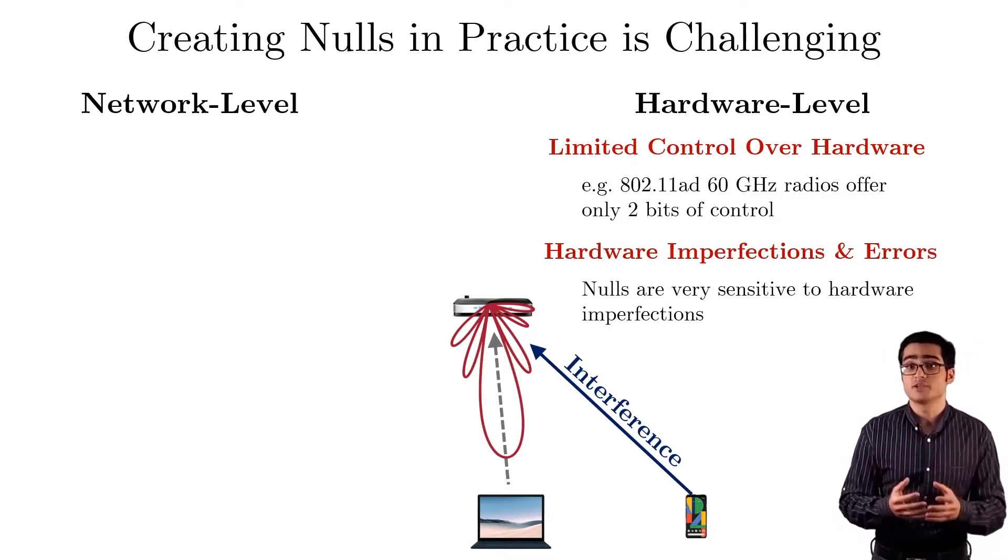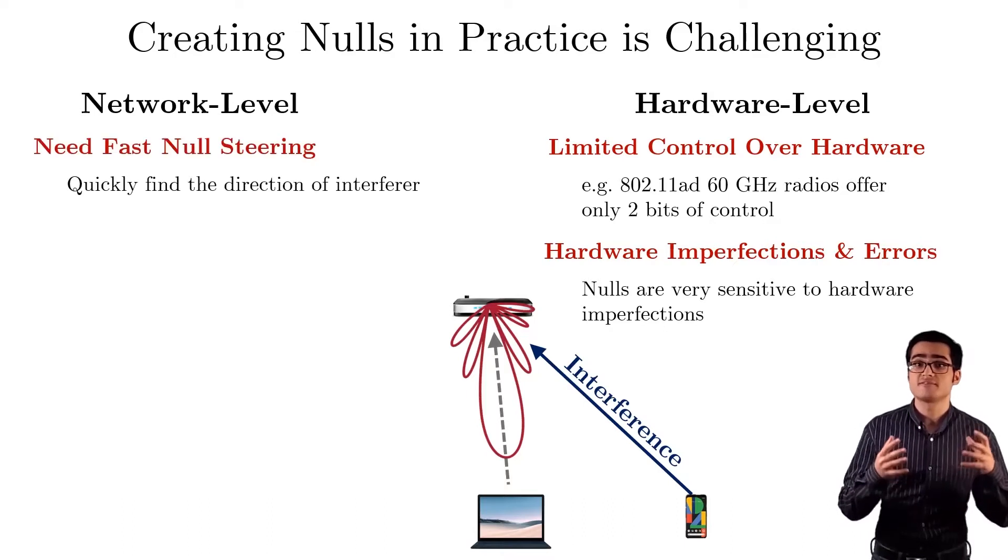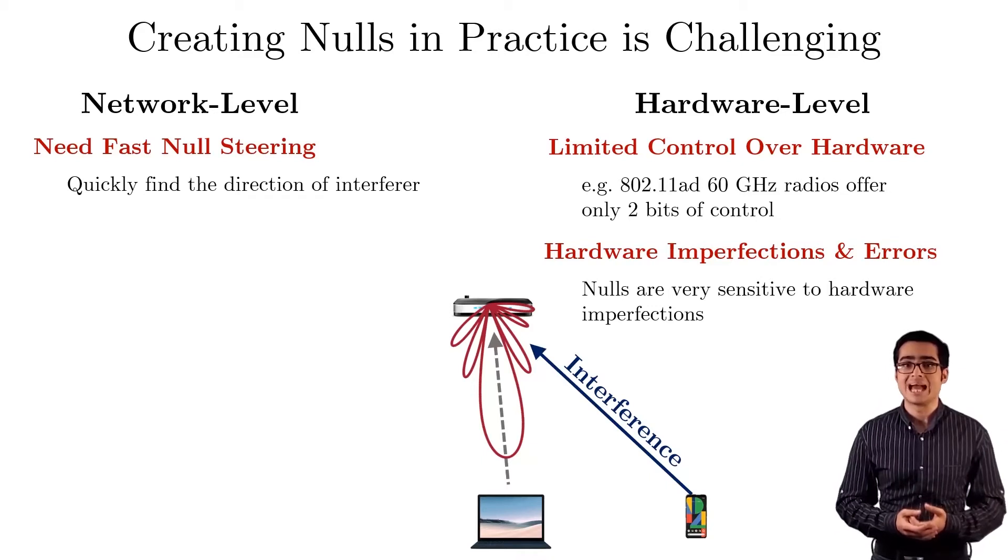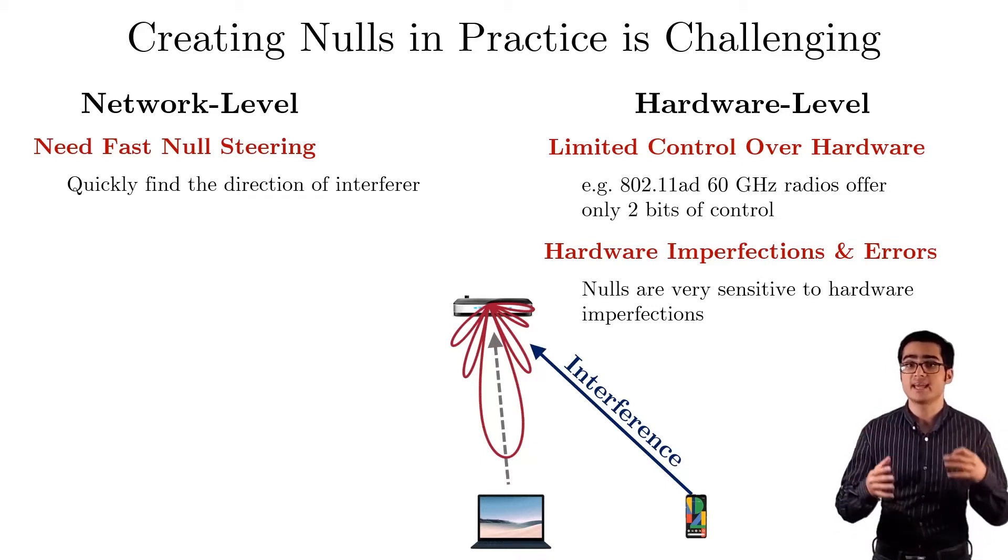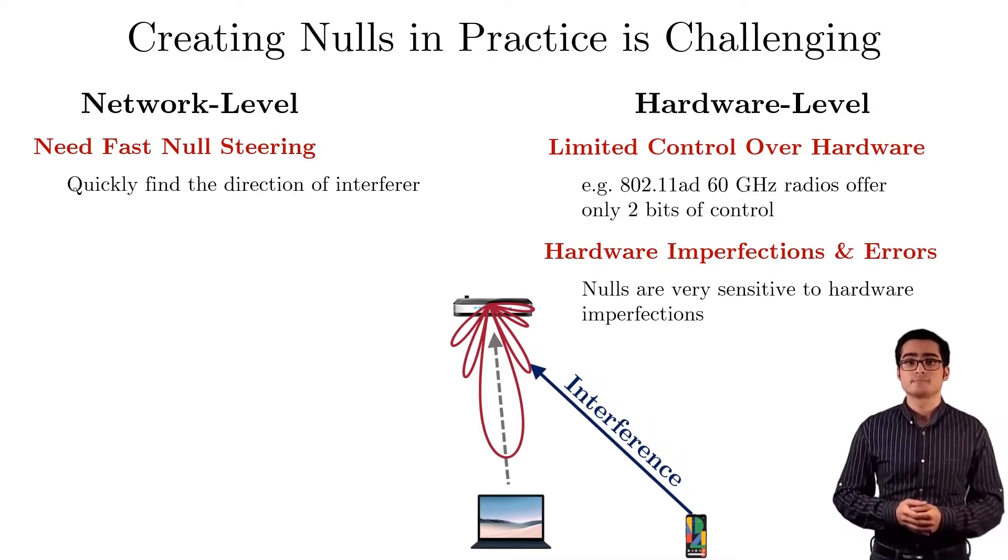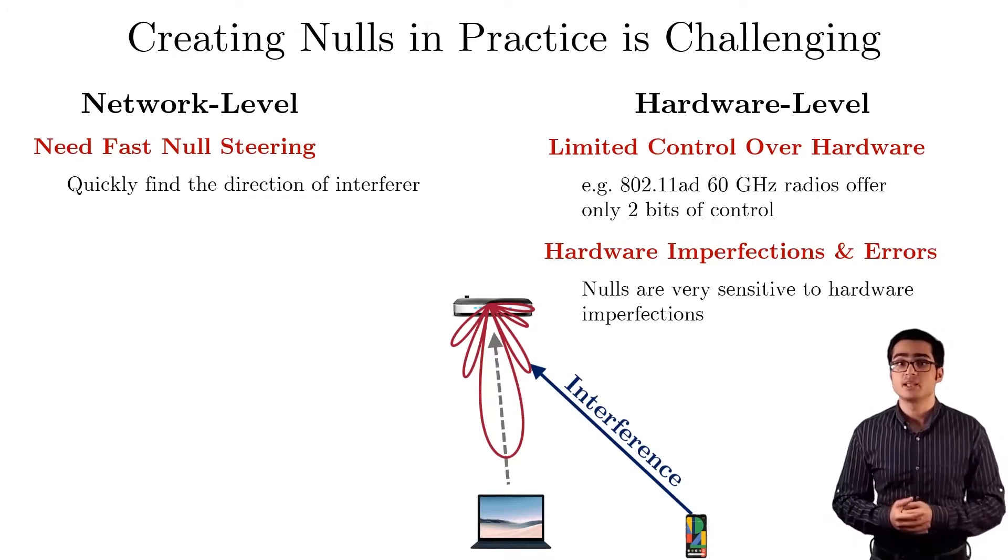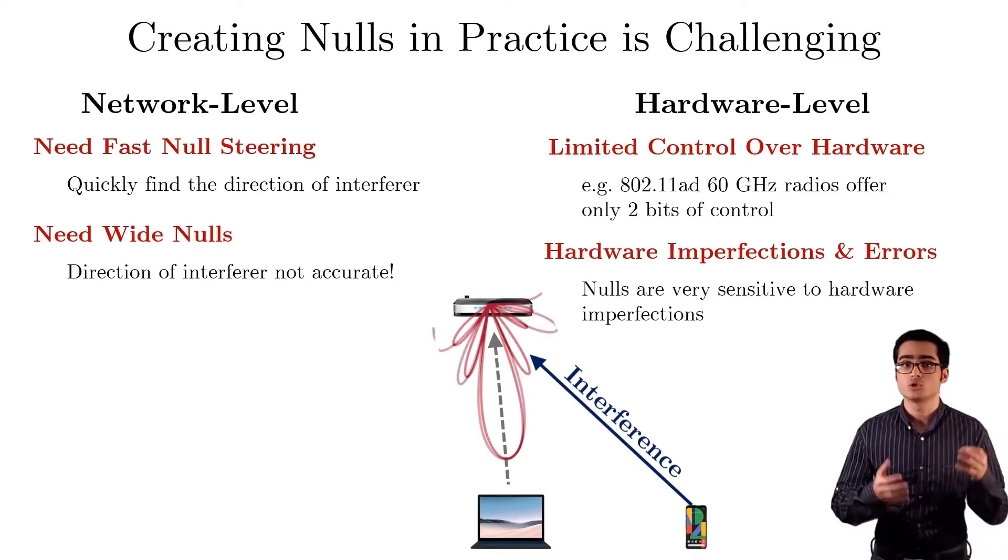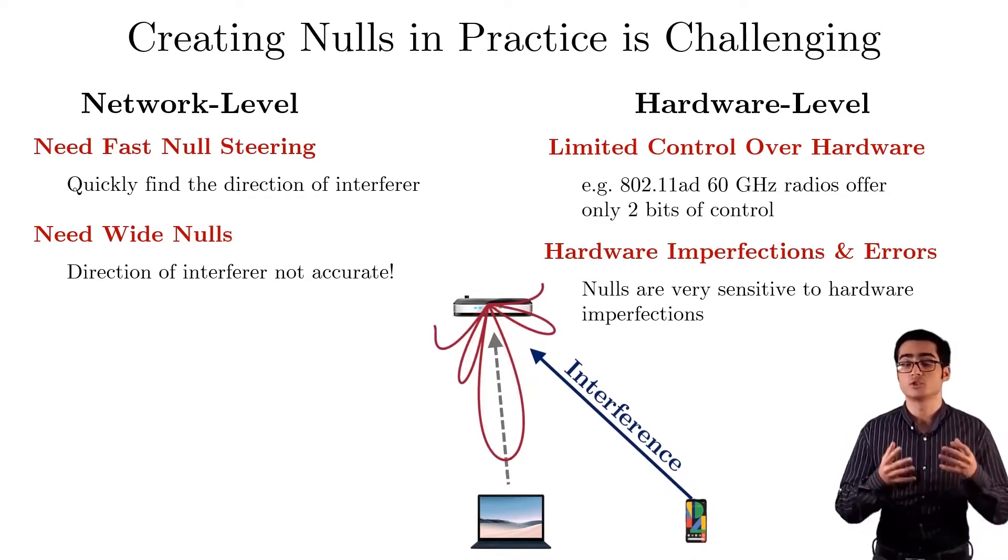On the network side, we face several challenges. First, once an interferer shows up, we need to quickly find its direction so we can create a null in that direction. However, any small error in estimating the direction might prevent us from properly eliminating that interference. To ensure the interference is eliminated, we might need to create wide nulls, like this one, to tolerate the errors in estimating the direction.